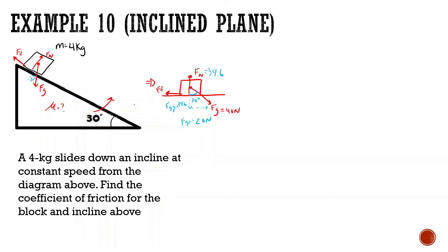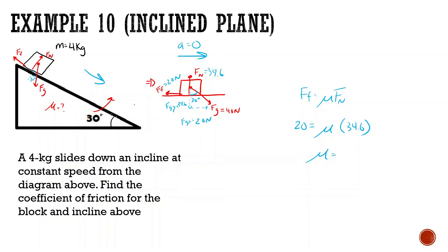It's moving down with constant speed. Since it's moving down this incline with constant speed, the forces in the x direction cancel out. Since it's being pulled to the right by 20 newtons of gravity, the force of friction is also 20 newtons — they cancel because it's moving with constant velocity, meaning acceleration is zero. Force of friction equals mu times force normal: 20 equals mu times 34.6, so mu equals 20 divided by 34.6, which gives us 0.58.